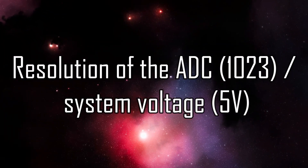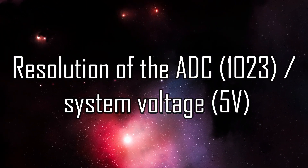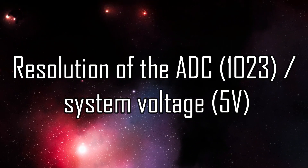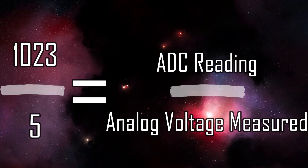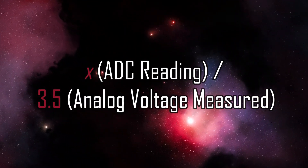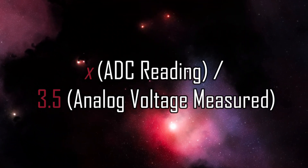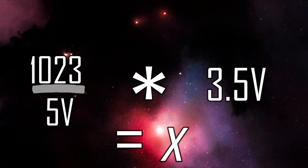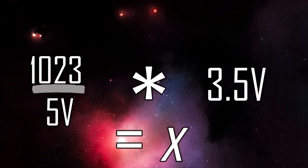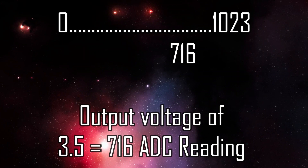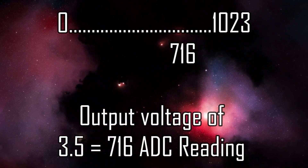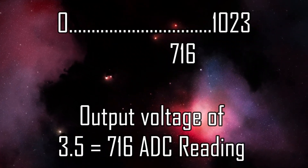The calculation to get to that is the resolution of the ADC divided by the system voltage. For the UNO, that would be 1023 divided by 5. This equals the ADC reading divided by the analog voltage measured. Let's say the analog device we're using is putting out a voltage of 3.5V. We plug that into the denominator for analog voltage measured and multiply that by the resolution and system voltage. 1023 divided by 5, times 3.5, equals 716. So on a scale between 0 and 1023, we've got an ADC reading of 716 for a 3.5V output voltage.